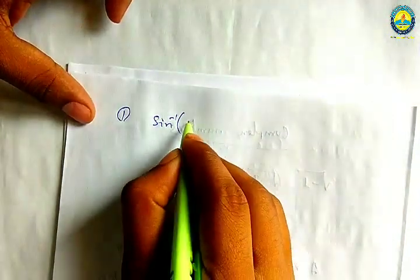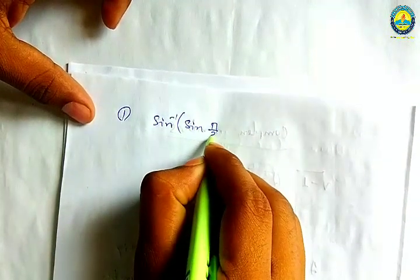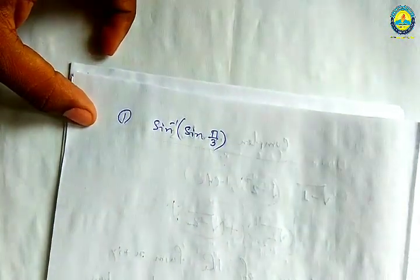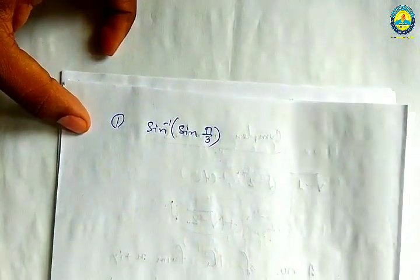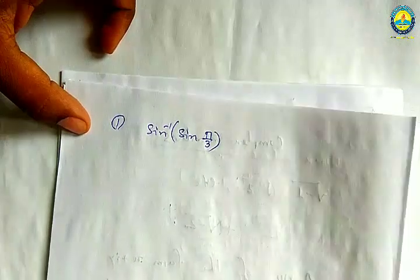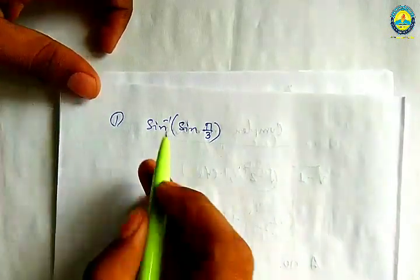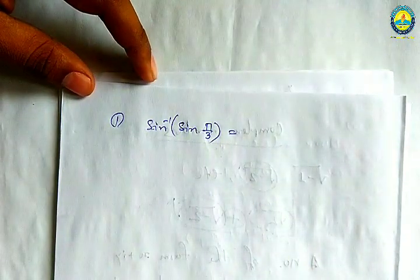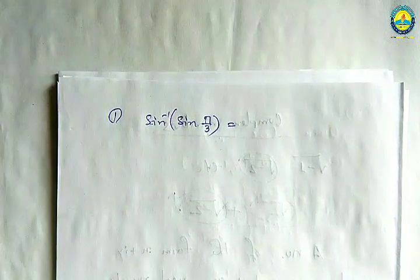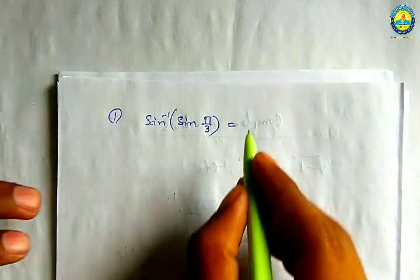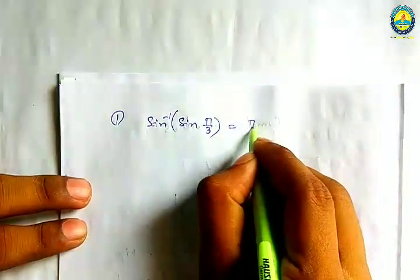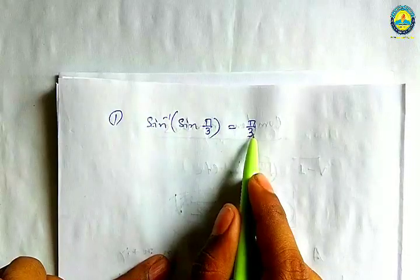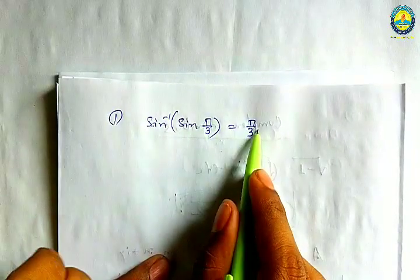Example number one: sin inverse sin(pi by 3). Using the sin inverse sin identity, this is equal to pi by 3. This is the same value.